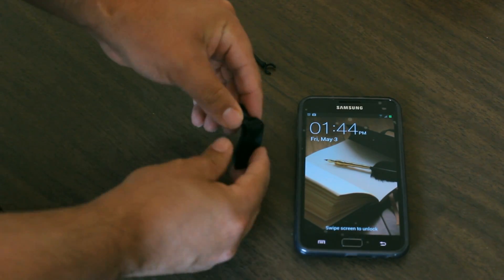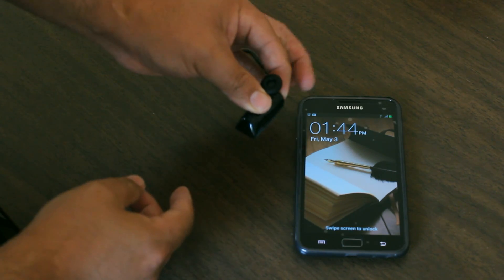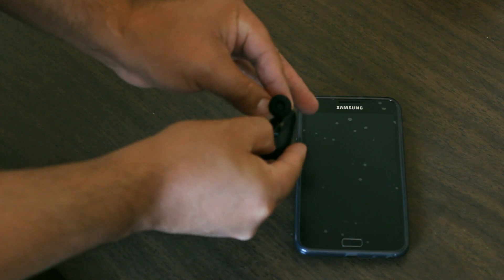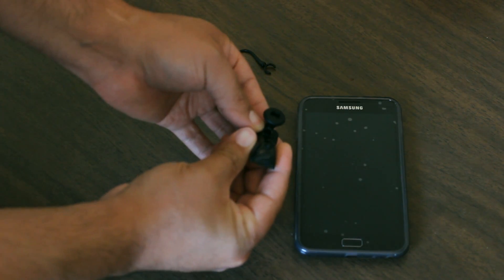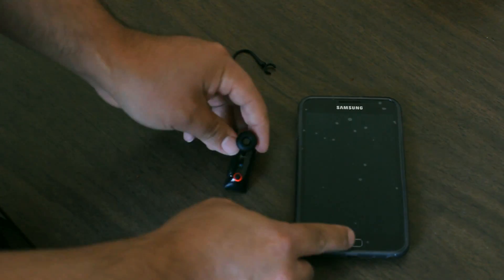Now we need to put the Bluetooth headset into pairing mode. In this case we press the answer key located in the back, then we turn on the Bluetooth headset and keep the switch on while we press the answer key. The Bluetooth headset is now in pairing mode.